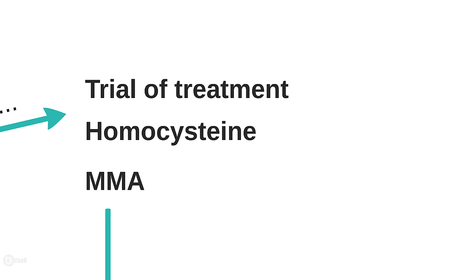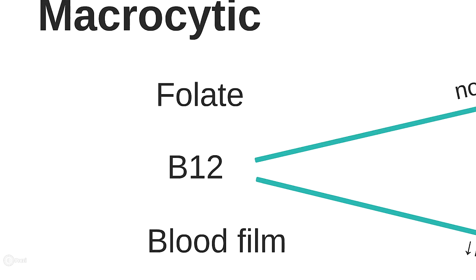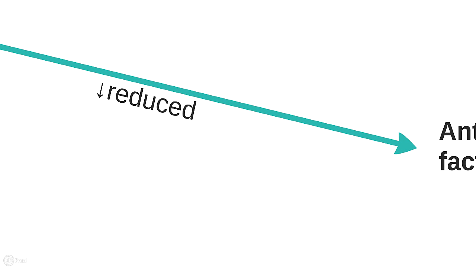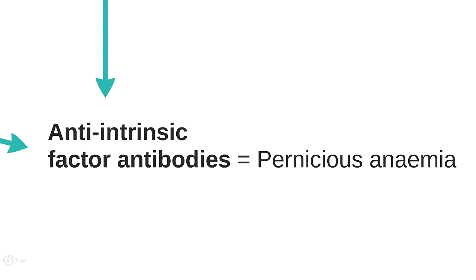If you have reason to suspect B12 deficiency, you should test for intrinsic factor antibodies, which is the most commonly used test for pernicious anemia. These will however only be positive in about 50% of cases of pernicious anemia, so you'll need to keep an open mind. Patients with pernicious anemia will need lifelong B12 replacement, which in the UK is given by intramuscular injection.